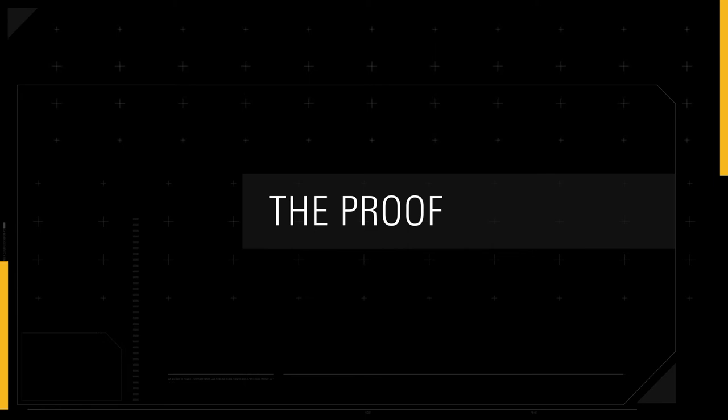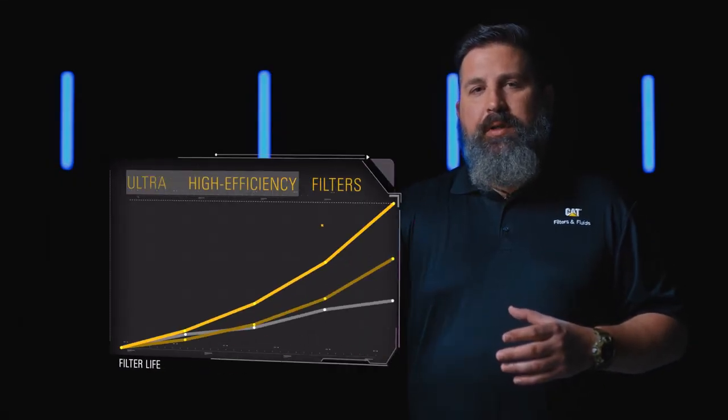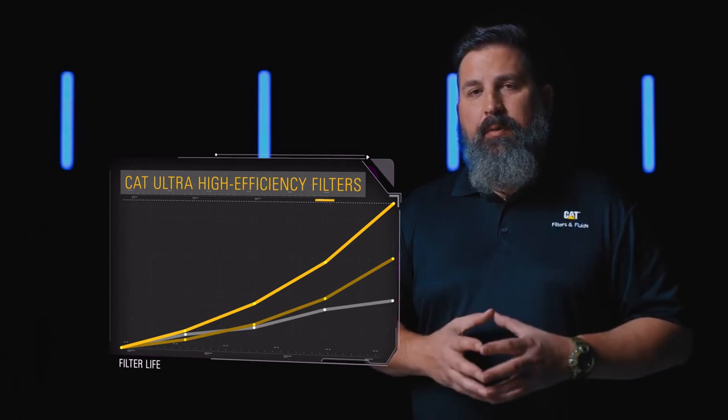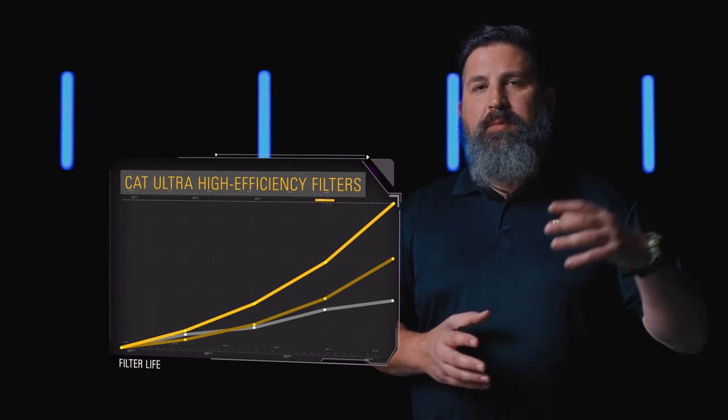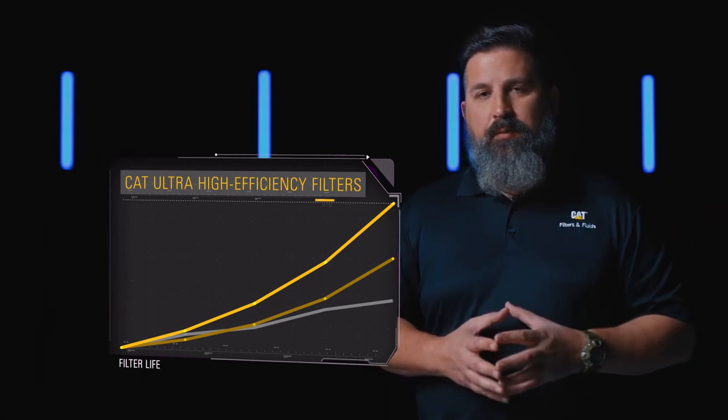A good example when we talk about looking at customer proof of performance is with air filters. In this case, we saw two and a half times longer life with the Caterpillar ultra high efficiency air filters versus the standard Caterpillar, which is even above and beyond a lot of other competitive filters in this proof of performance study.